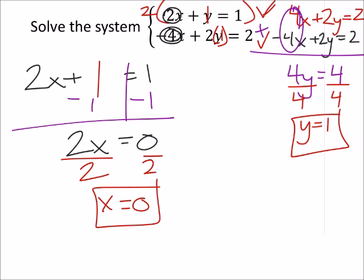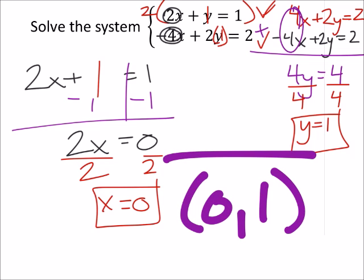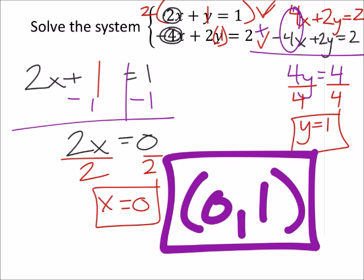We should write the answer for this as an ordered pair (0, 1). I'm okay if you write them separately as long as I can find them, so box them in if you do that.